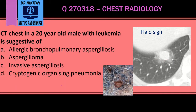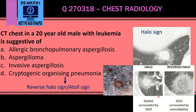Cryptogenic organizing pneumonia shows the reverse halo sign, which is also called the atoll sign. So invasive aspergillosis is associated with the halo sign, and COP is associated with the reverse halo sign. In the reverse halo sign, it is ground glass surrounded by consolidation, while in the halo sign it is consolidation surrounded by ground glass.